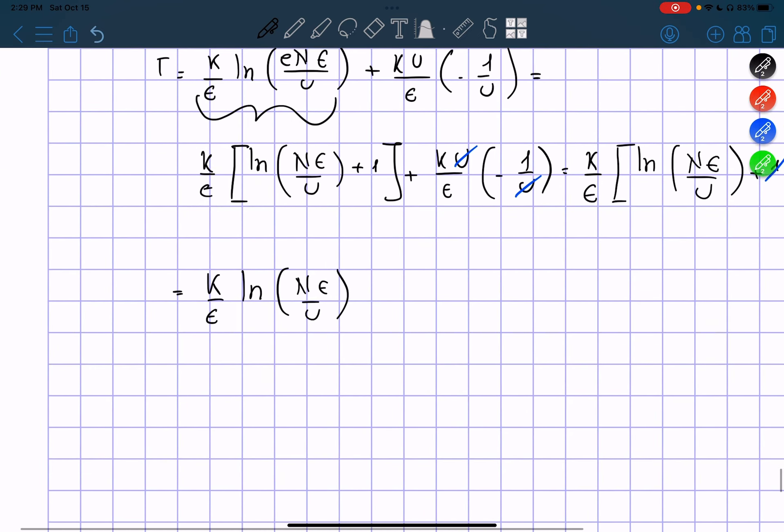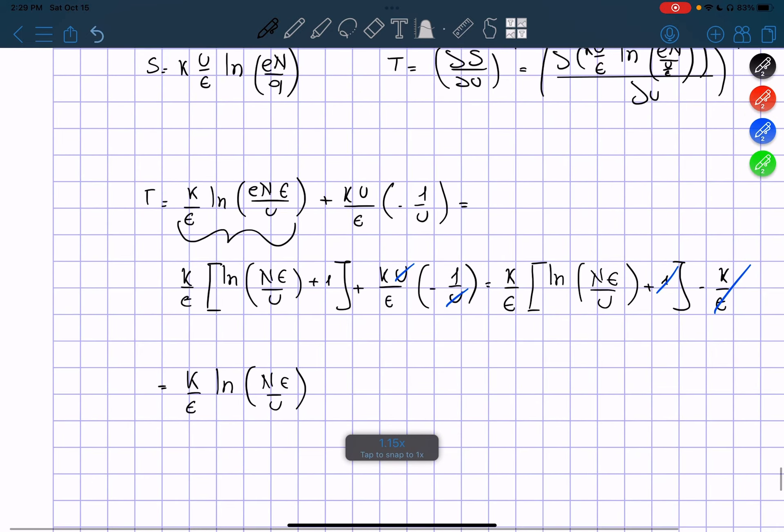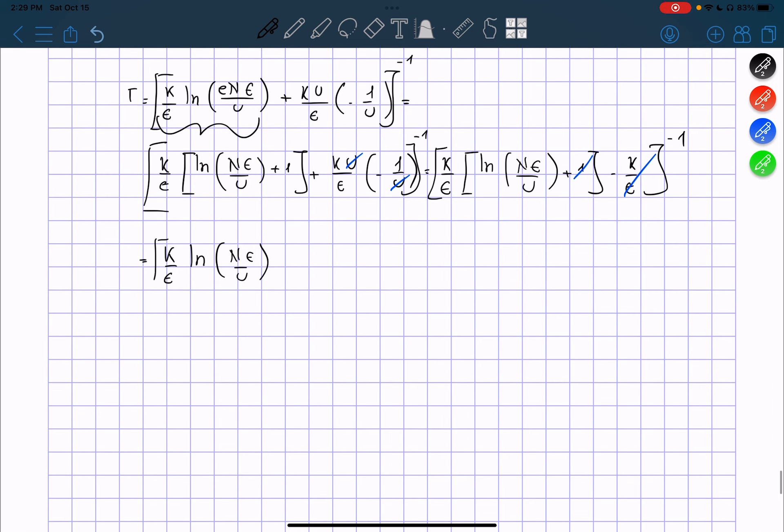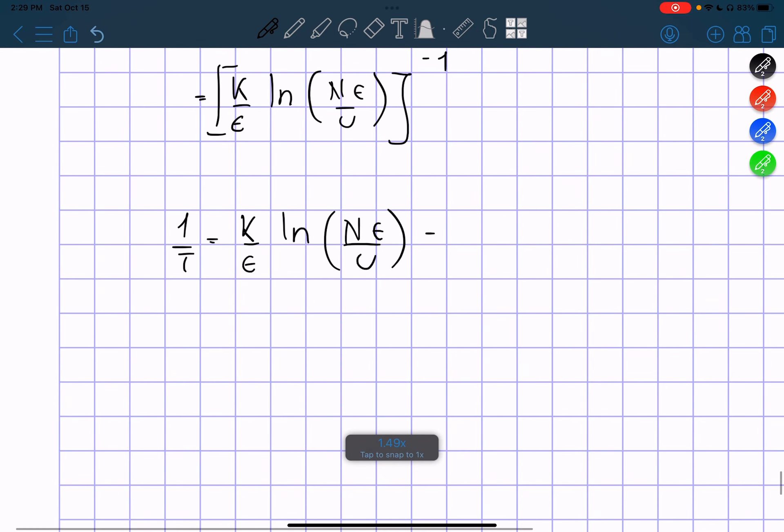So now we know that this, I forgot to write it here, this was the power of negative 1. So here's the power of negative 1. So now we start solving, we're going to get 1 over T is equals to K over the constant ln of N constant divided by U, which means that...